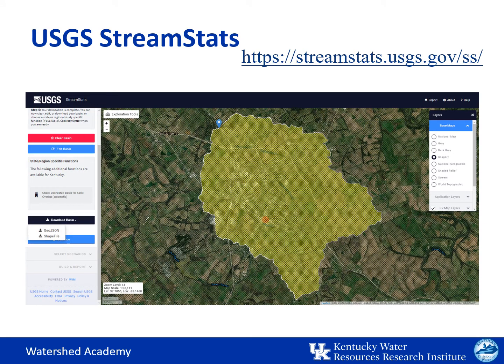Now you can see the contributing watershed or drainage area highlighted in yellow. You can also see in the left toolbar that you have the options to clear the basin and try again, which is sometimes necessary if you don't click directly on the stream but beside it and only a small area is delineated. Or you can edit the basin if you know that the drainage area has changed. It's important to also know that you can download the basin map as a shape file which can be used in ArcGIS or on Google Earth.